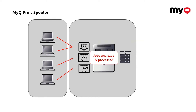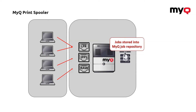The system checks how many pages it has, how many copies, if it's color or black and white, so we can then modify them and apply some policies, which we will explain later. Once this part is done, the job is then processed and stored to the MyQ repository.